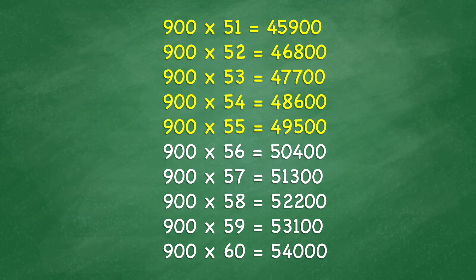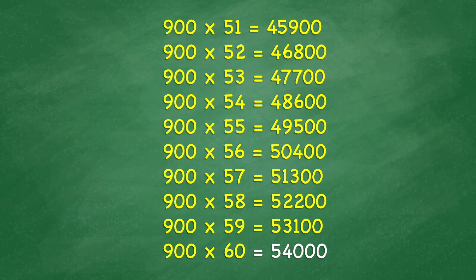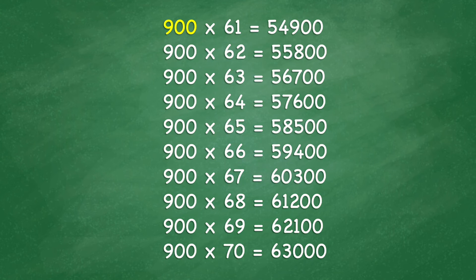900 times 56 equals 50,400. 900 times 57 equals 51,300. 900 times 58 equals 52,200. 900 times 59 equals 53,100. 900 times 60 equals 54,000. 900 times 61 equals 54,900. 900 times 62 equals 55,800. 900 times 63 equals 56,700.